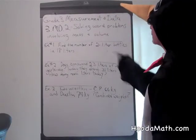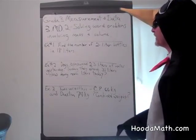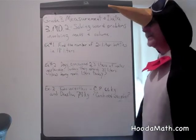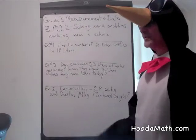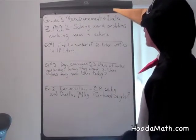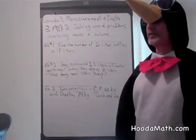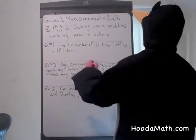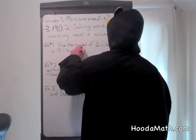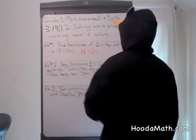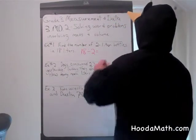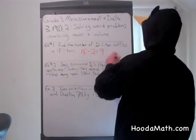We're going to find the number of 2-liter bottles of lemonade in 18 liters. Well, if you had 18 liters and you split them into 2-liter bottles, what are you doing? Yes, you're dividing them into 2-liter bottles. So 18 divided by 2 would equal 9 2-liter bottles.